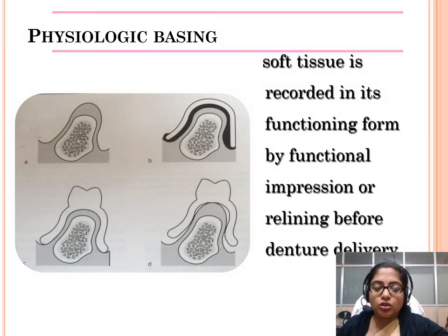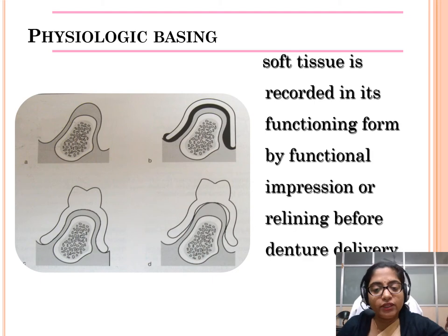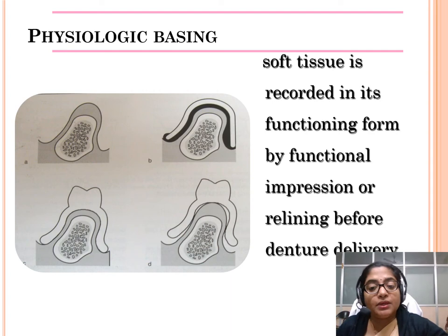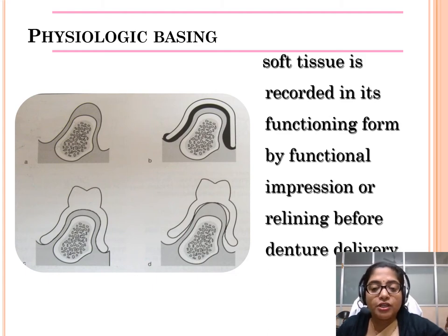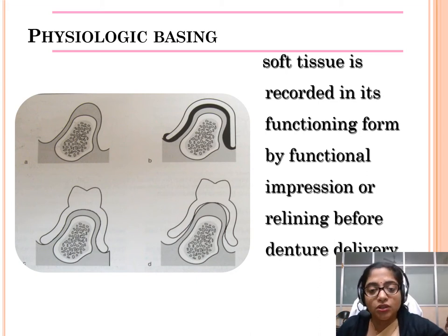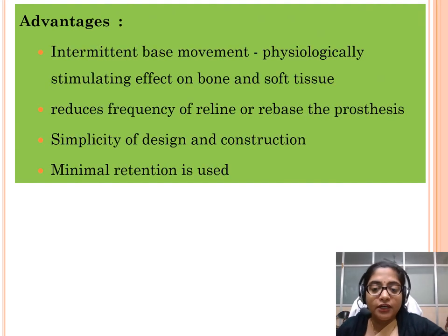The second philosophy is physiologic basing, where soft tissue is recorded in its functioning form by functional impression or relining before denture delivery. No stress breaker device is employed here. Instead, the difference in compression of the PDL and mucosa is matched by using a functional impression — either at the impression stage or by relining the denture after delivery — and that is how equalization of forces is achieved.